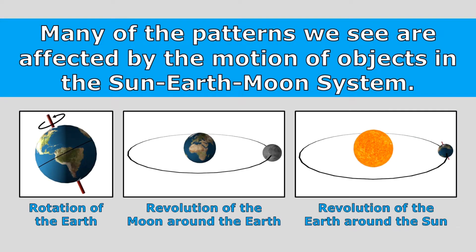Many of the patterns we see in nature are affected by the motion of objects in the sun, earth, moon system. The rotation of the earth, the revolution of the moon around the earth, and the revolution of the earth around the sun all cause changes in nature that happen in a predictable pattern.